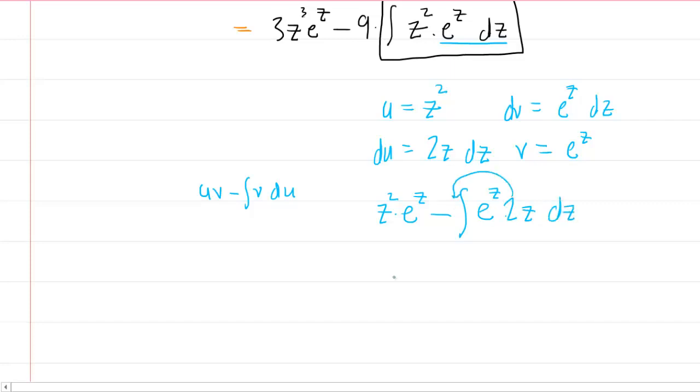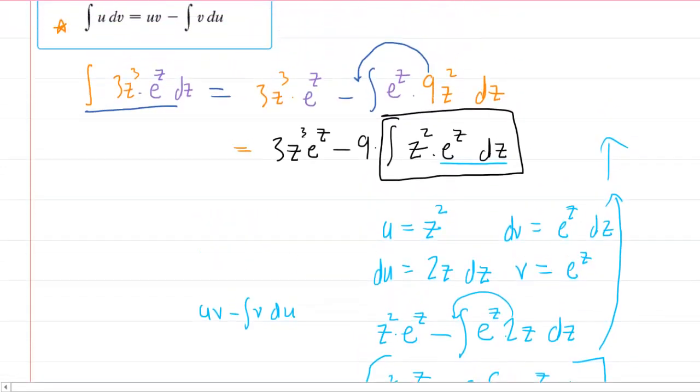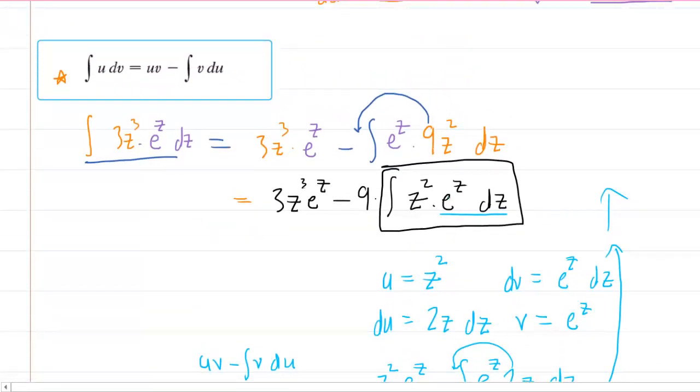We'll factor out this two right here. So now we have z squared times e to the z minus 2 integral. And we'll just do a little switcheroo again here. We'll say z times e to the z dz. So this right here, remember, is the integral. We go all the way back up of this expression that we put in the box.